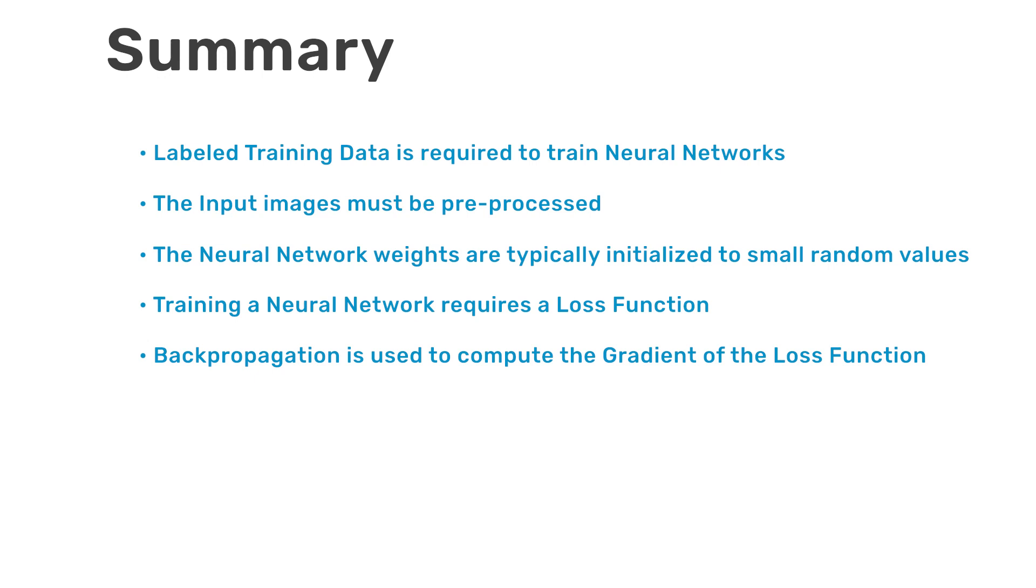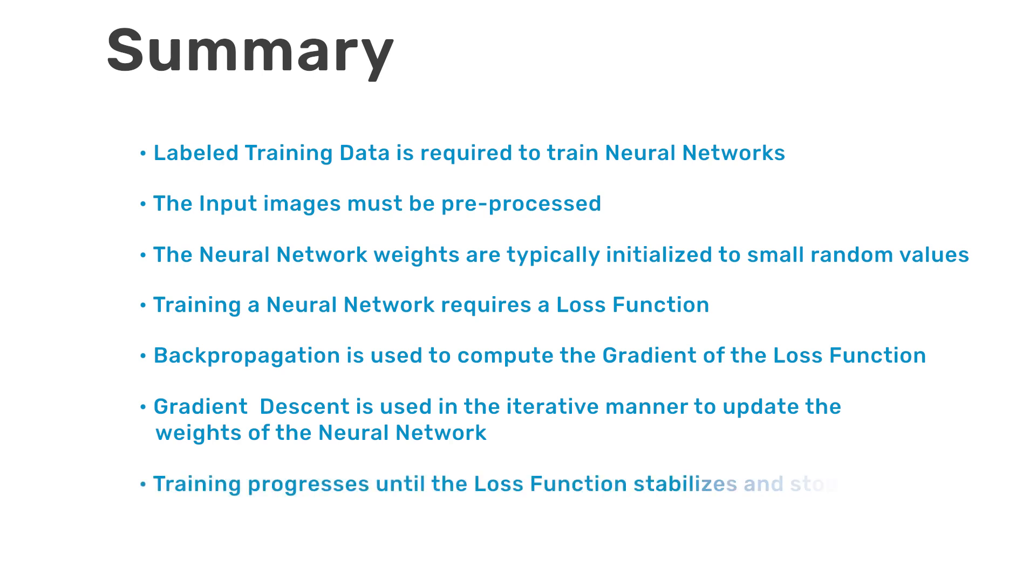The gradient of the loss function is computed using an algorithm called backpropagation, which is built into deep learning frameworks like TensorFlow and PyTorch. And then gradient descent is the process that's used in an iterative manner to update the weights of the neural network. And then finally, training progresses until the loss function stabilizes and stops decreasing.